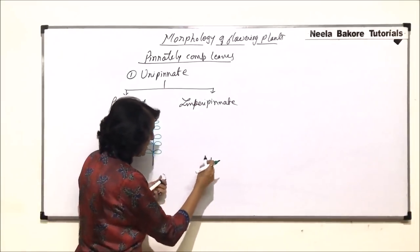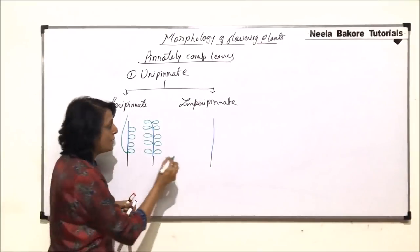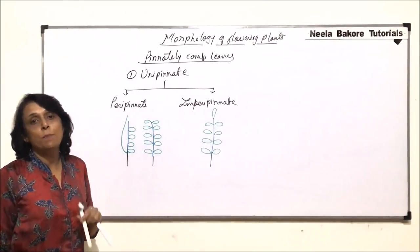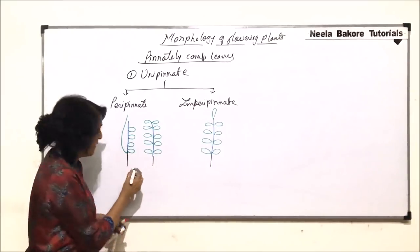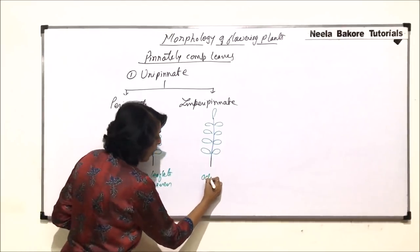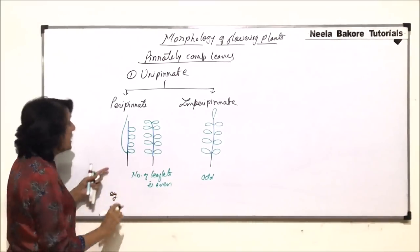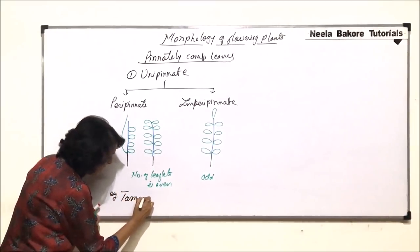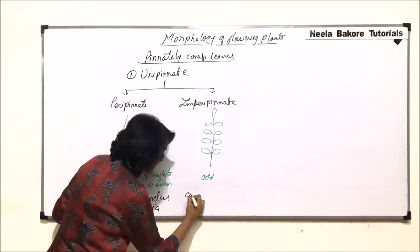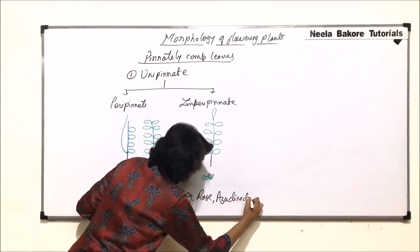In imparipinnate, this is the petiole and this was the midrib. The lamina has undergone incision only once, but the leaflets on the lower side are paired and there is one unpaired leaflet at the tip. So here the number of leaflets is even in paripinnate, and odd in imparipinnate. Paripinnate leaf is seen in Tamarindus and Cassia, and imparipinnate is seen in rose and Azadirachta — that is neem.